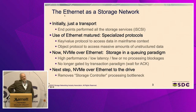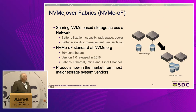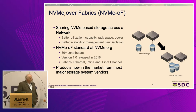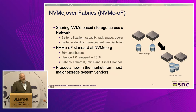The logical next step is NVMe over Ethernet to the drive — it removes the storage controller processing bottleneck. NVMe over Fabrics, or NVMe-oF, shares NVMe-based storage across the network for better utilization of capacity, rack space, and power, plus better scalability, management, and fault isolation. The NVMe-oF standard at the NVM Express organization has over 50 contributors; the first version was released in 2016, and it runs over InfiniBand and Fibre Channel as well as Ethernet. There are now products from more storage vendors that support NVMe-oF.